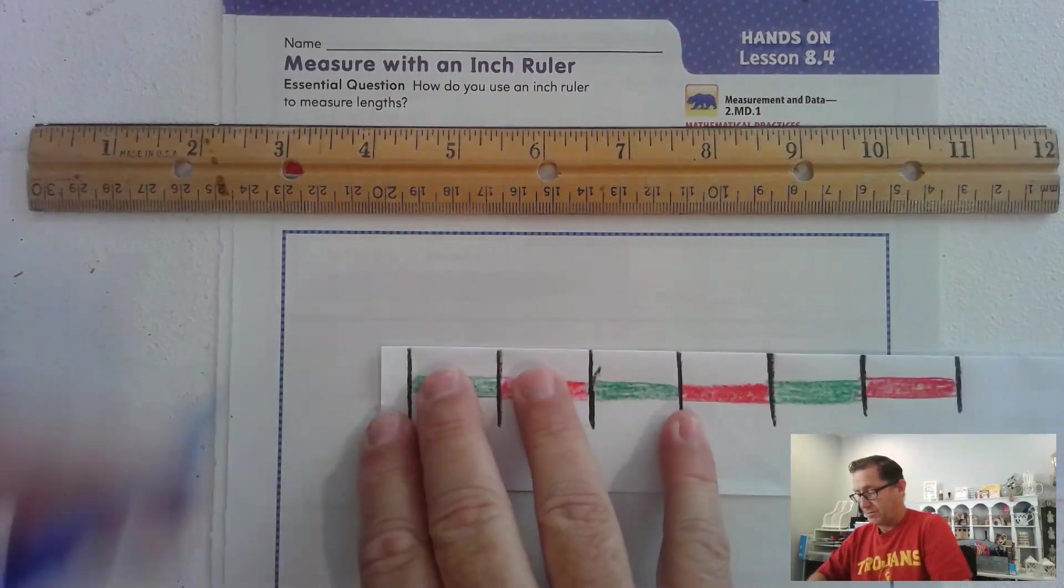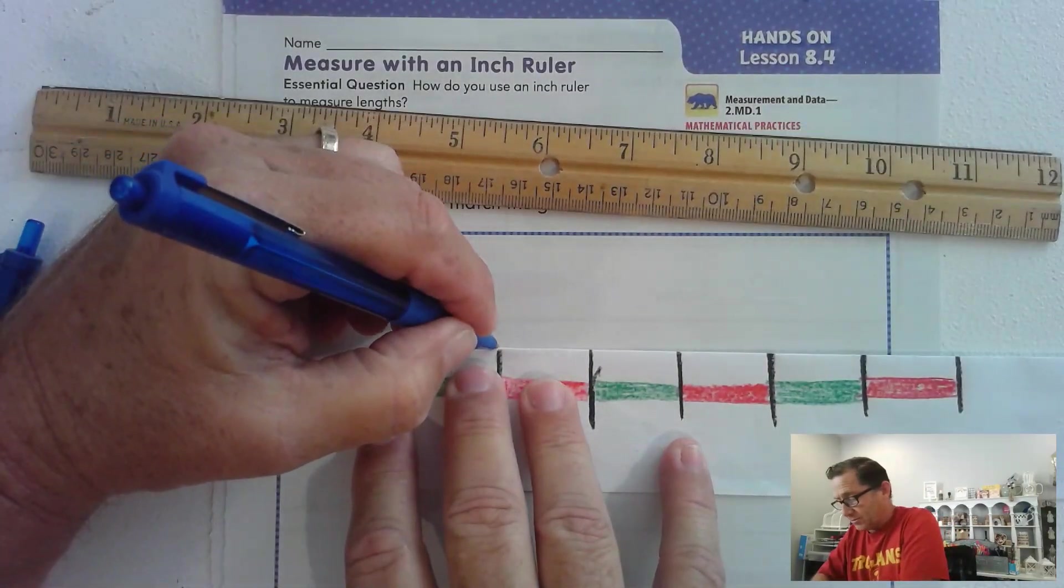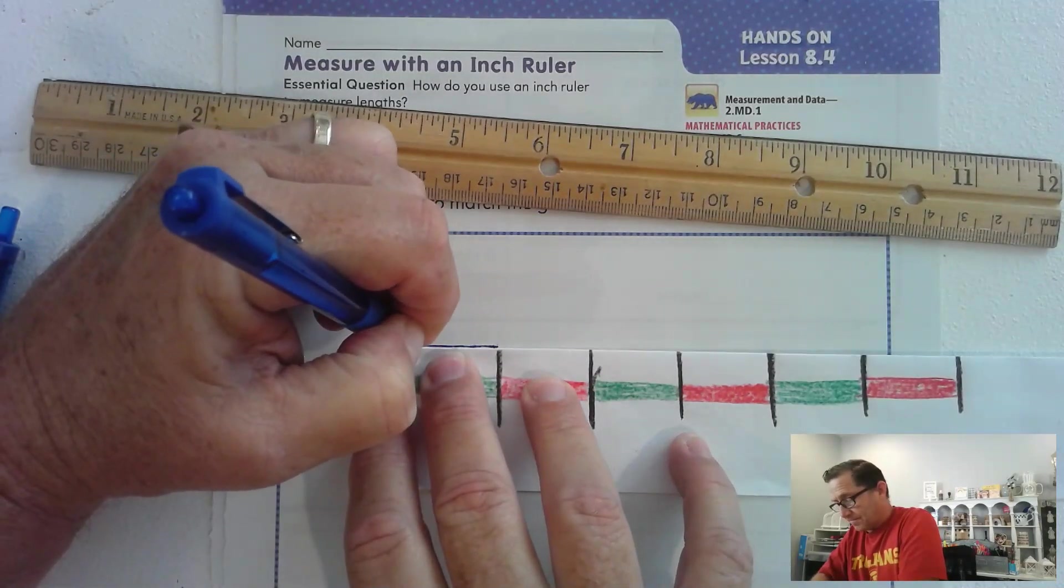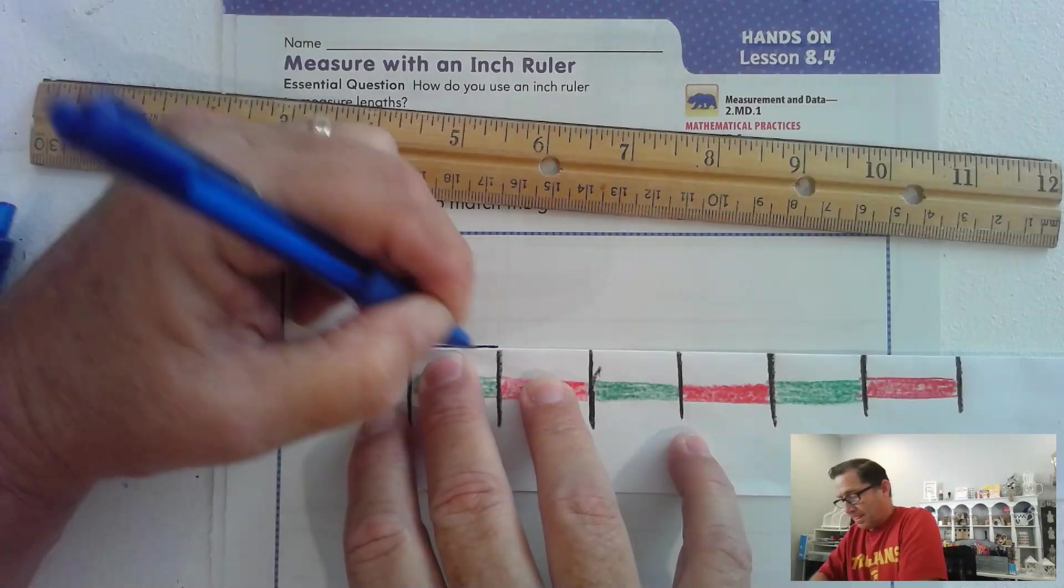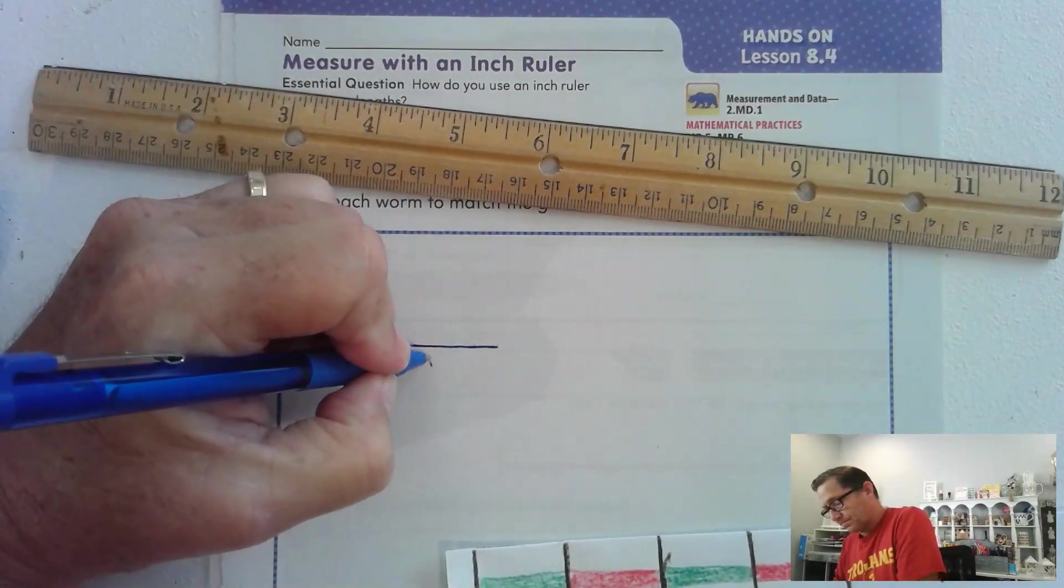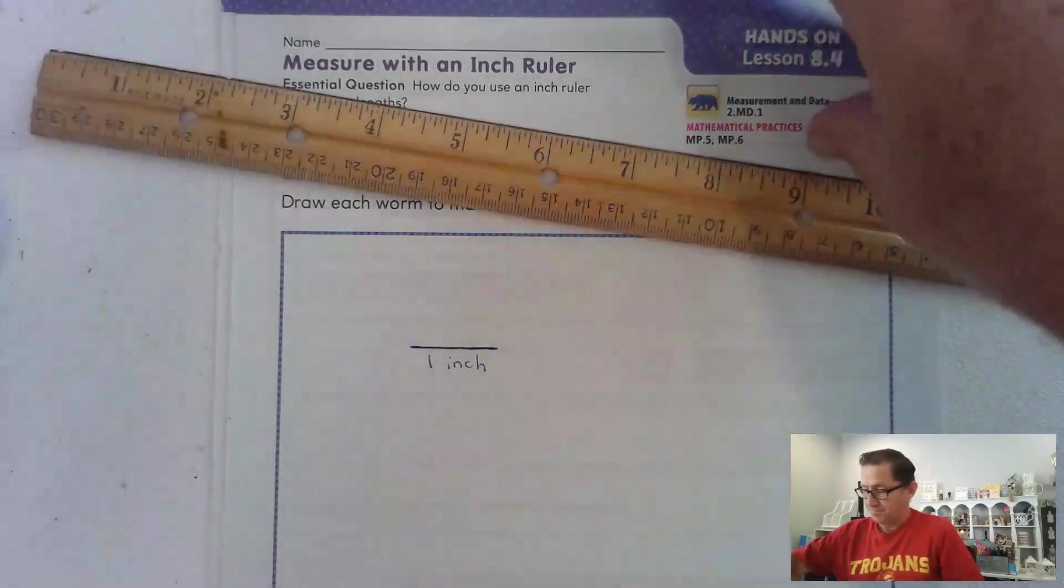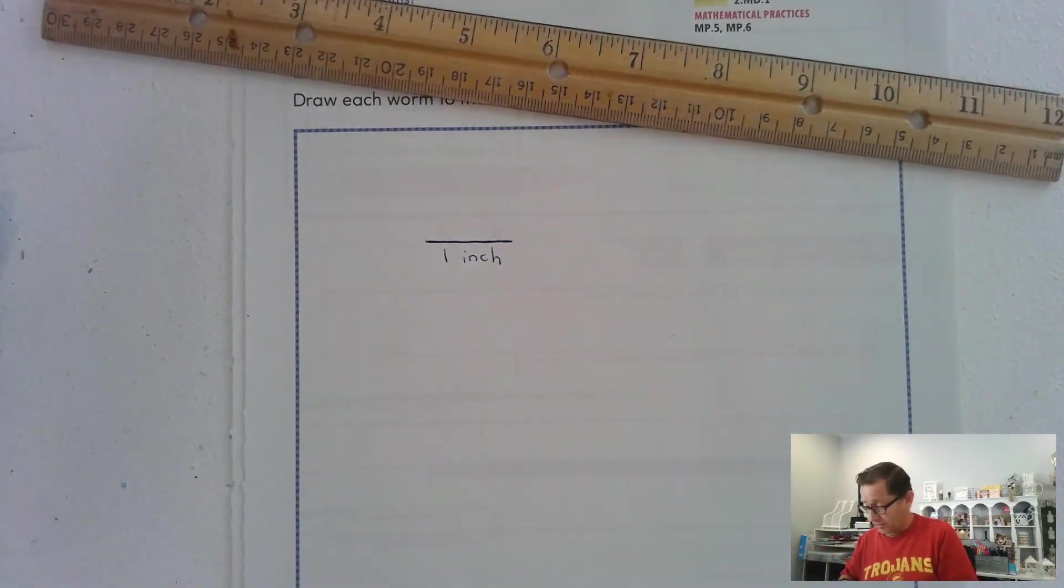So remember it would start at the end, right? And it would extend to our first line. Alright, and you could be more creative with your worm if you want, but I'm just going to draw a straight line.